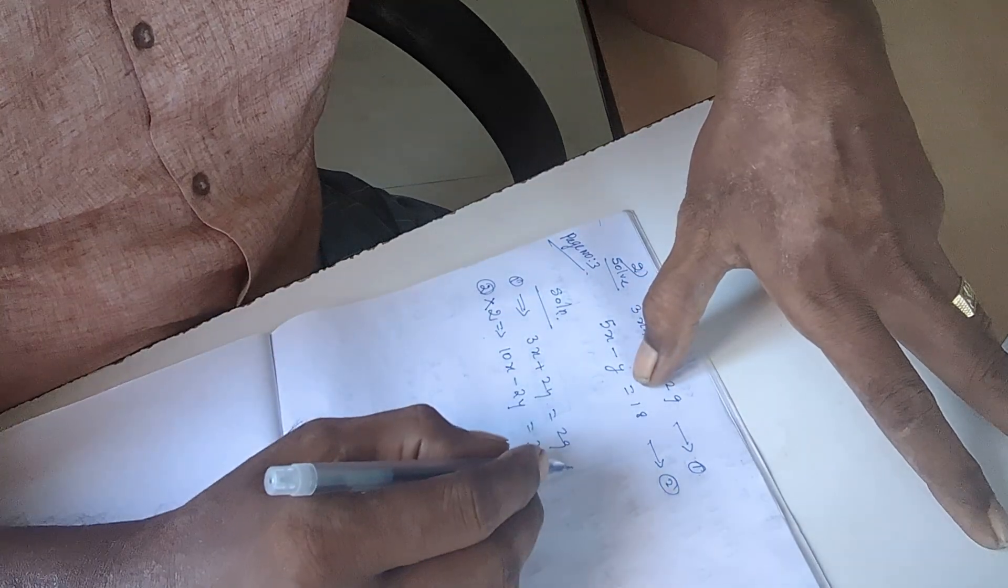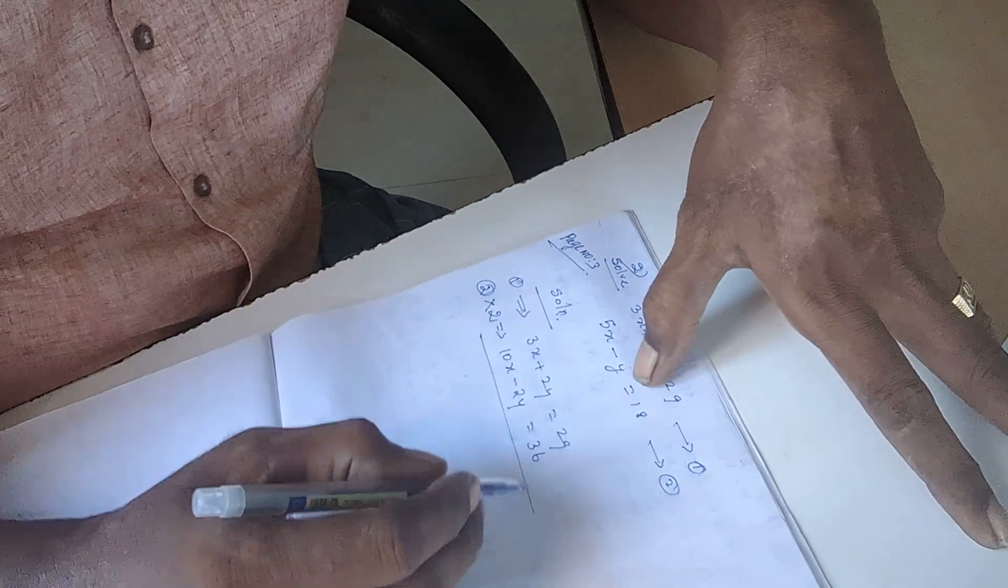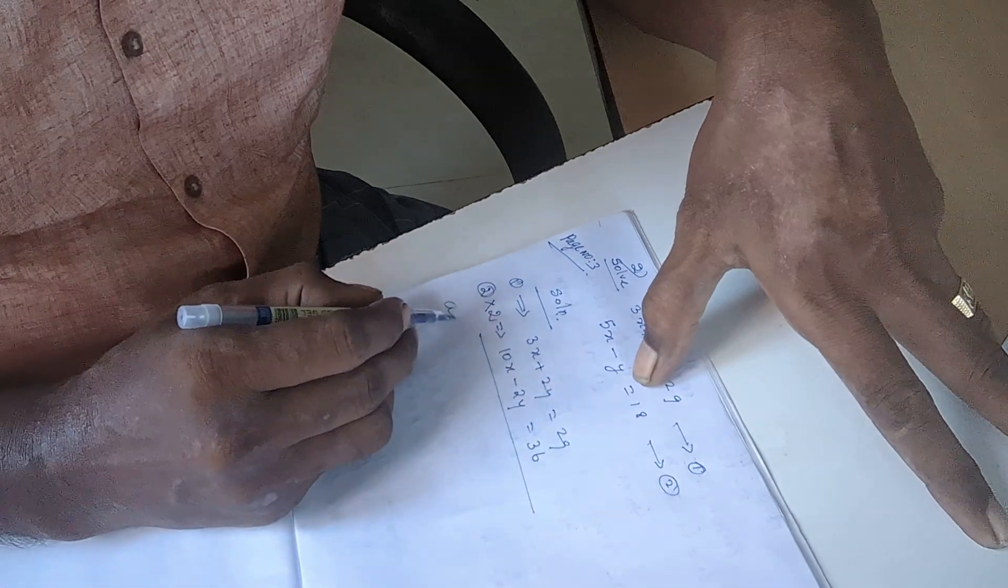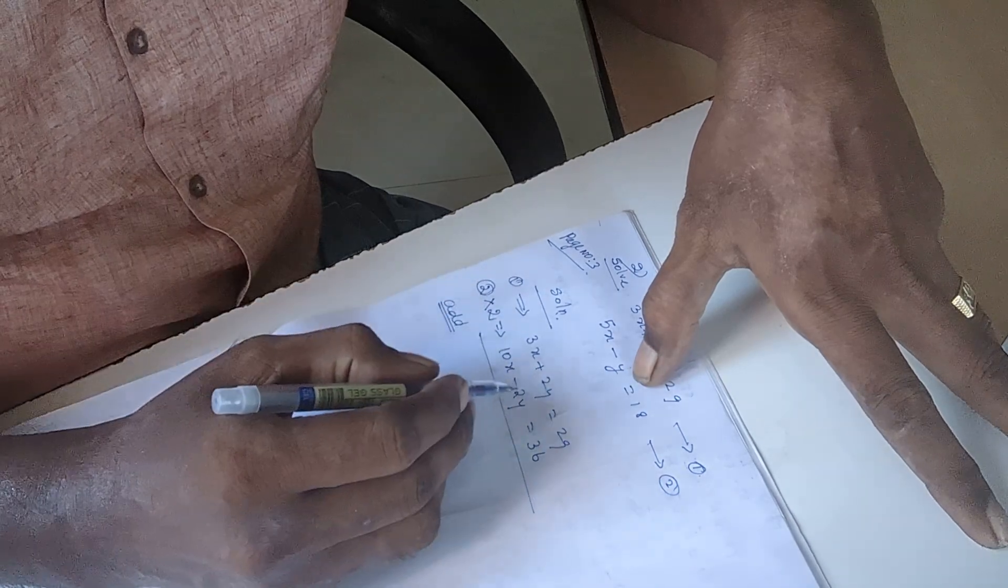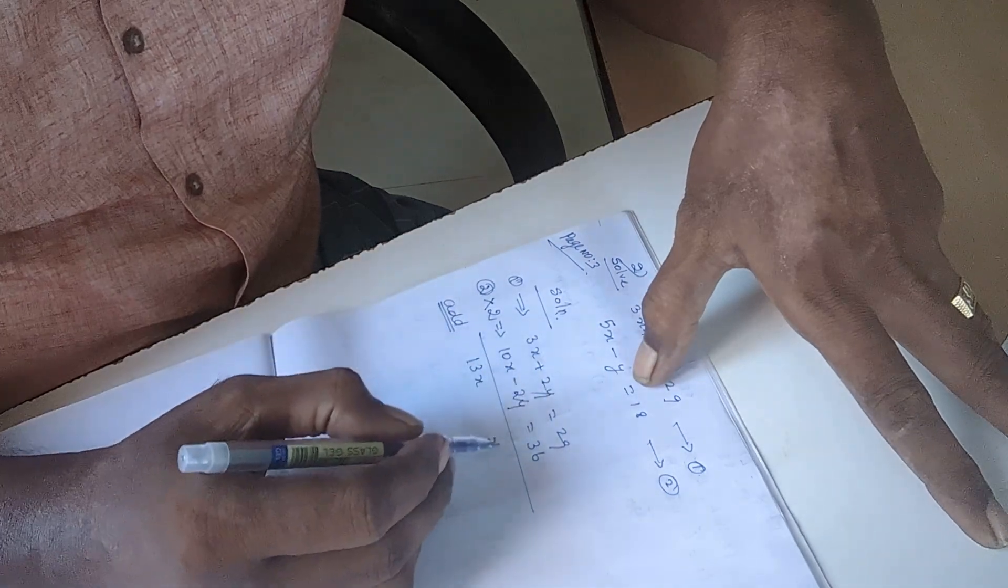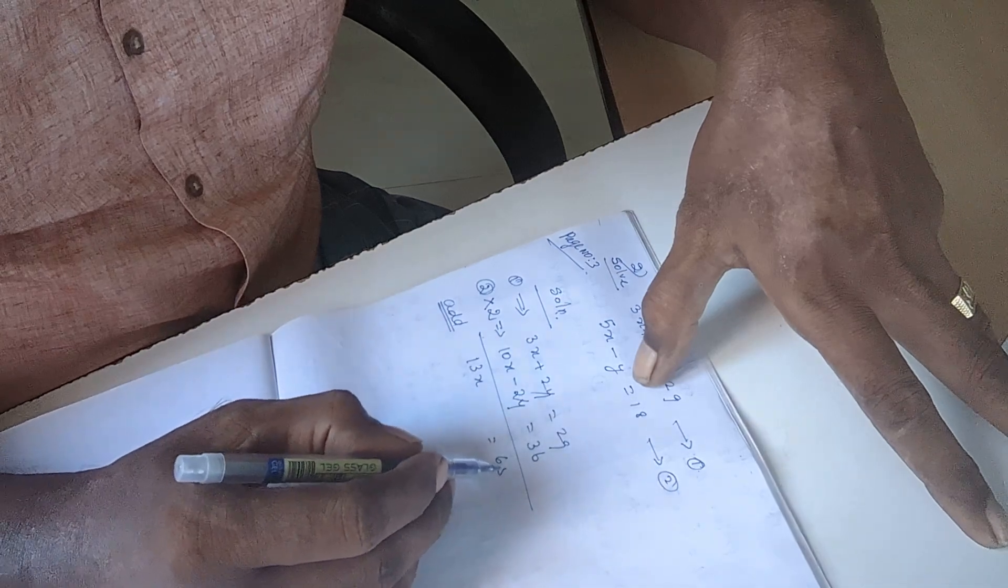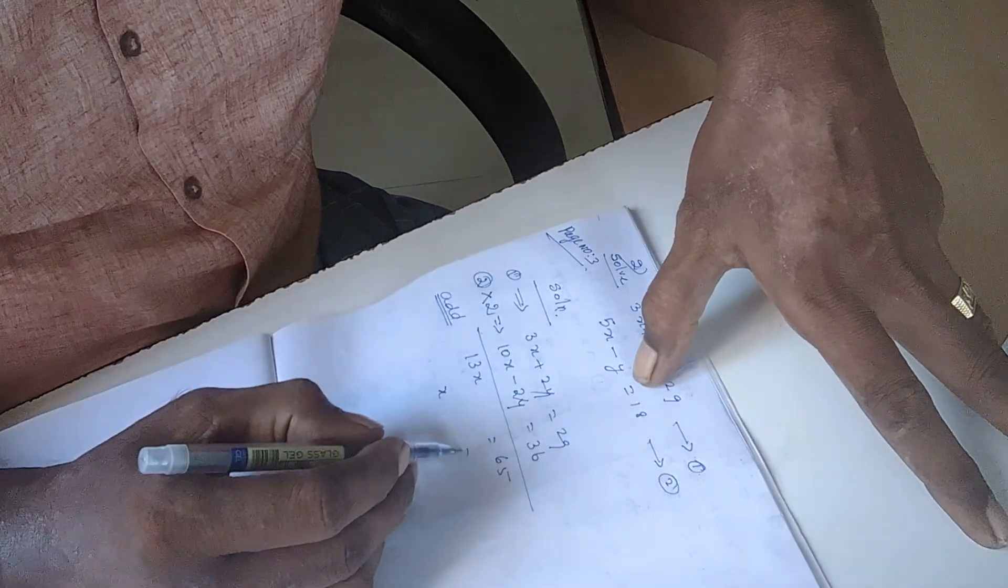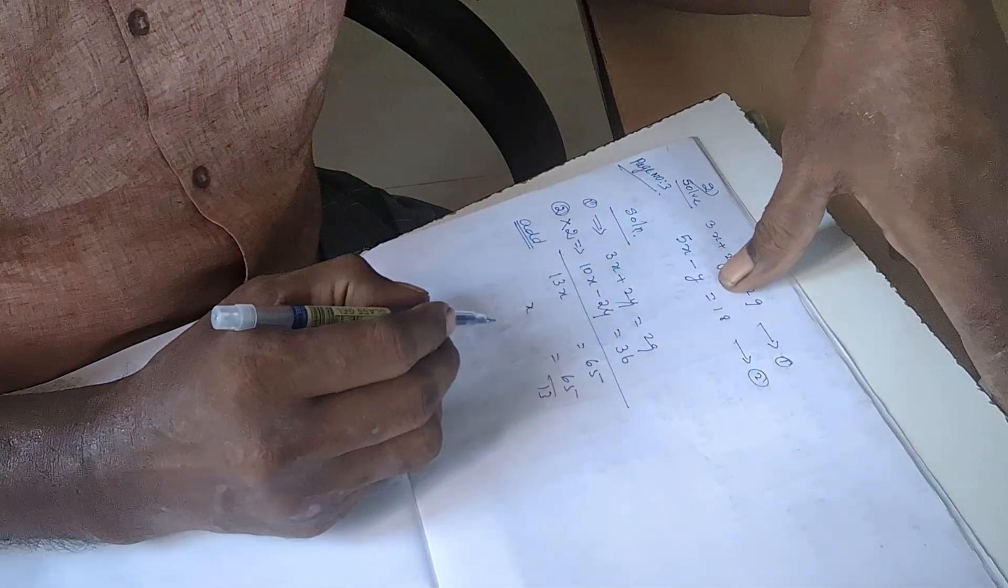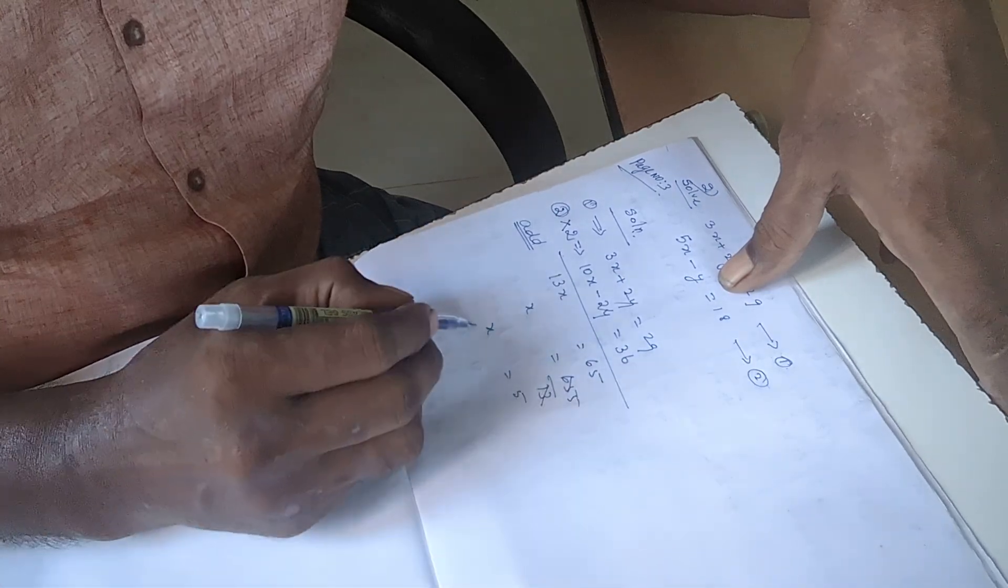Now the coefficient of y is same. Both are same number but different sign, so we add it. Ten plus three is thirteen x. If you add these two, they cancel, and thirty-six and twenty-nine we add it, sixty-five. So x equals sixty-five by thirteen. We cancel, so we get x is equal to five.